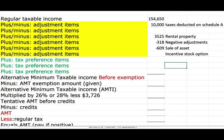In the prior session we started with a fictitious example with regular taxable income of $154,650. We added the taxes that were deducted on Schedule A, we added the difference in depreciation on the rental property, we subtracted the negative adjustments for depreciation, and we had the negative adjustment for the sale of the asset. Now we're going to look at incentive stock options and other adjustments and preferences.